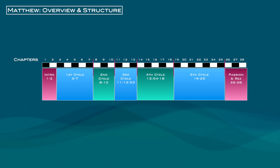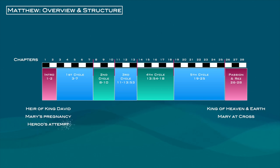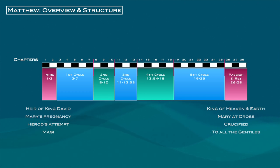For example, in the prologue we have Jesus coming from the line of David, and in the conclusion we see Jesus enthroned as king: 'All authority in heaven and earth has been given to me.' In the prologue, Mary becomes pregnant before being married — a very difficult situation for her and Joseph — and in the conclusion she's present to watch her son be crucified. In the prologue, Herod the Great attempts to kill the infant Jesus; in the conclusion, Jesus is crucified but overcomes with his resurrection. And in the prologue we have the Gentile magi coming to worship Jesus, while in the conclusion there is the command to go to all the Gentiles and teach them all that Jesus commanded.